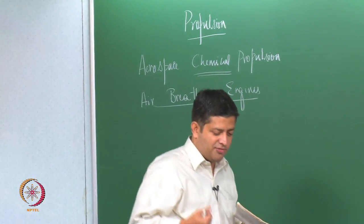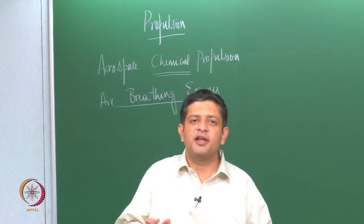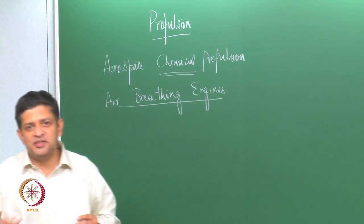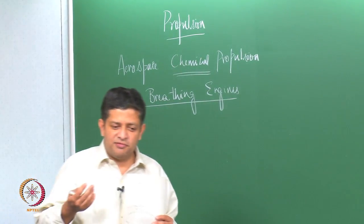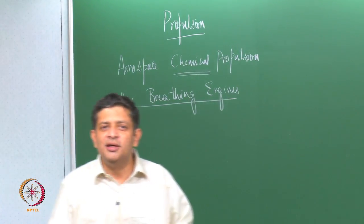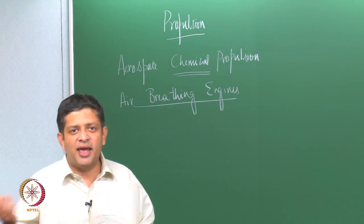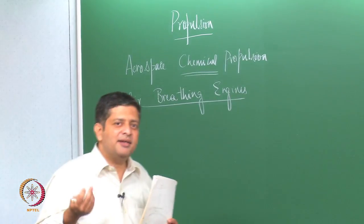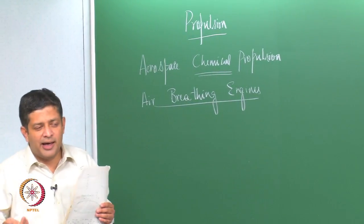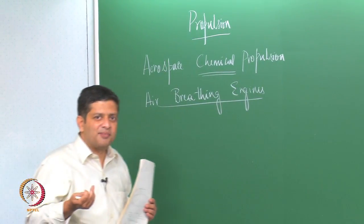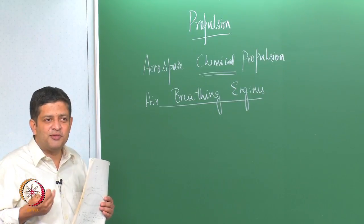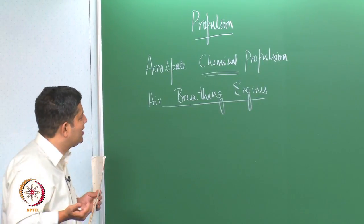We also have something known as air breathing and non-air breathing propulsion. In an air breathing propulsion system, the fuel only is carried on board; the oxidizer we get from the air. Air has 21 percent oxygen and we use that as the oxidizer. Air is used as the oxidizer in air breathing propulsion, which is why it is known as an air breathing engine.